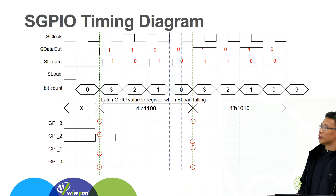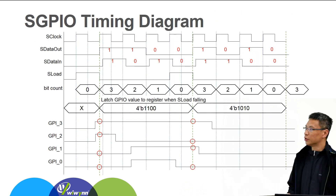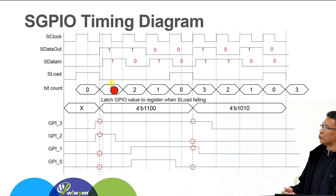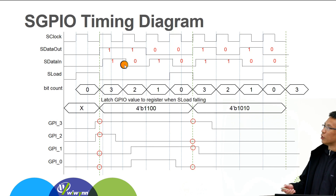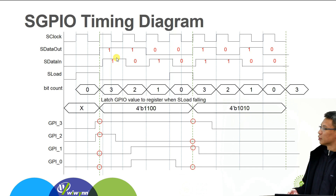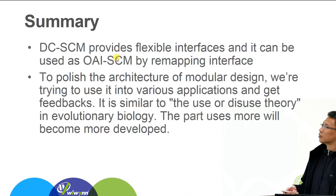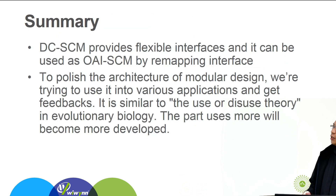For the GPIO timing diagram, the GPIO signal is tied to the falling edge of S-low, and the data-in signal is tied to the falling edge of S-clock.